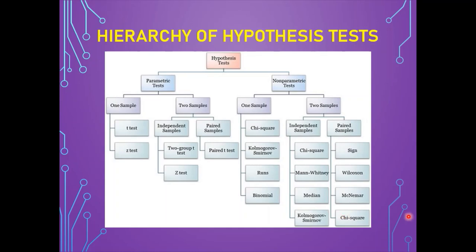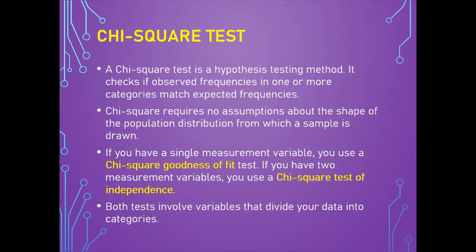Now we will discuss two commonly used non-parametric tests: the chi-square test, which can be used for both one-sample and two-sample non-parametric tests, and the sign test. The chi-square test is a hypothesis testing method. Two commonly used chi-square tests are the chi-square goodness of fit test and the chi-square test of independence.